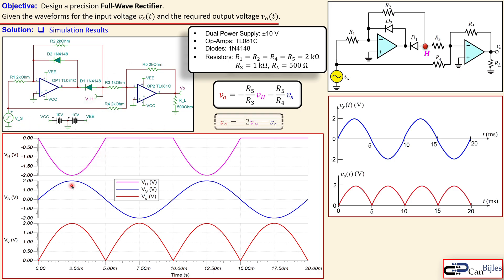Looking in more detail by substituting resistor values: 2 kΩ over 1 kΩ gives minus 2 for the VH term, and minus 1 for the VS term. So VO equals minus 2 times VH minus VS. For the positive cycle with a 2 V peak, multiplying VH by minus 2 gives 4 V flipped, then subtracting the 2 V positive VS gives 4 minus 2 equals 2 V — exactly as shown in the plot.